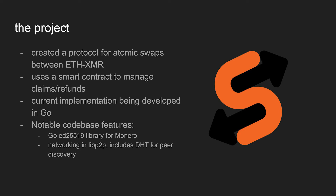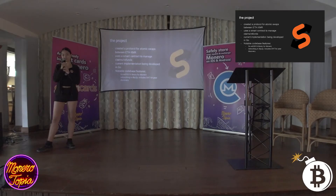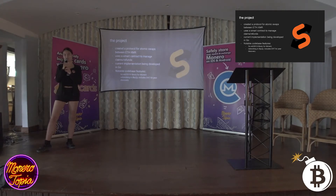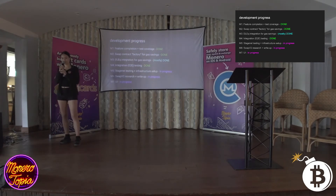Some notable codebase features: I added a Go ed25519 library for Monero addresses, signing, and private key management — there wasn't really anything like this in Go, so hopefully it'll be useful for anyone wanting to develop Monero stuff in Go. I also added a networking layer using a library called libp2p, which is an open-source peer-to-peer library for networking. It includes a DHT — a distributed hash table — for peer discovery, so you can discover peers and offers on the network in a decentralized manner.